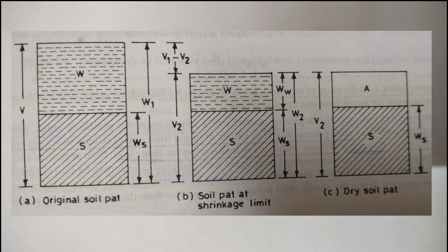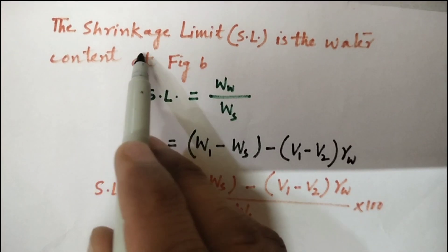The shrinkage limit is calculated as shown below. These figures represent the soil sample in plastic state which fills the container of known volume V1 and has a weight W1. As the sample is gradually dried, the water content at certain state becomes equal to the shrinkage limit. At this point, the volume decreases to V2, the corresponding weight being W2. The sample is still in saturated state. Beyond the shrinkage limit, the sample continues to dry with no further volume decrease until it reaches the dry state as represented in figure C. At this stage, the dry weight of the soil WS and its volume V2 are measured.